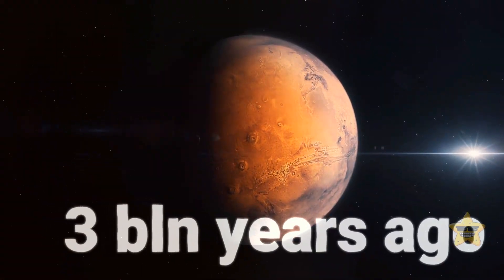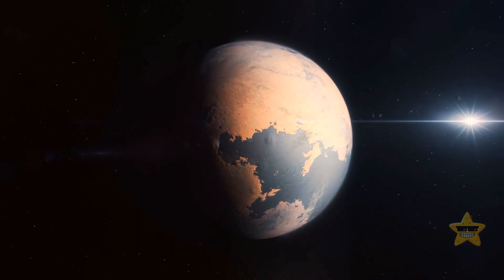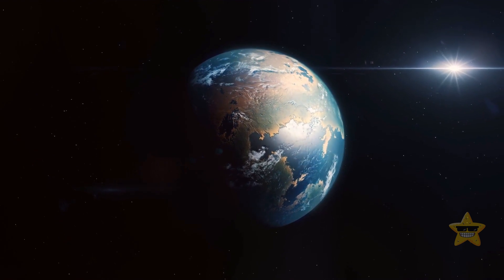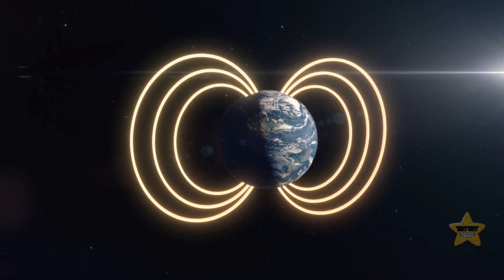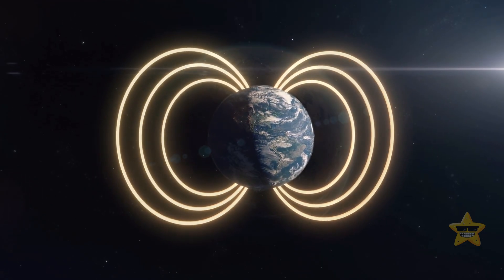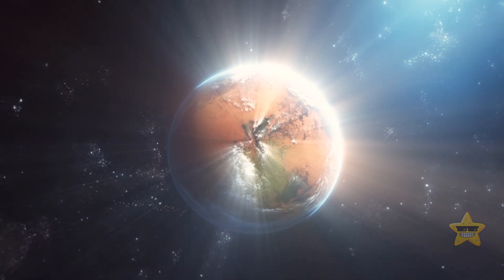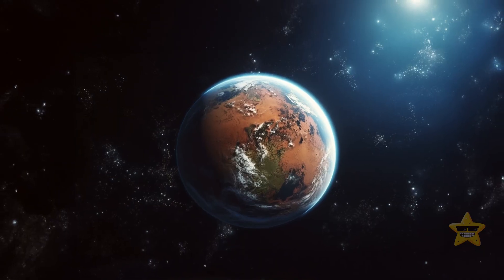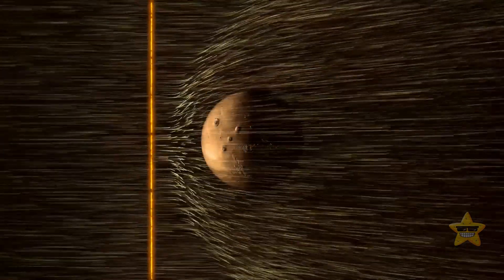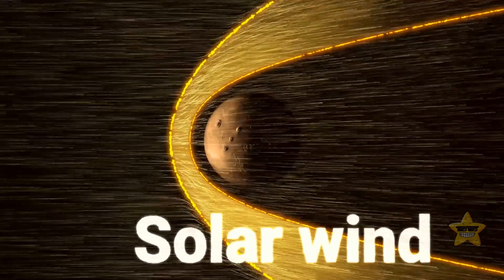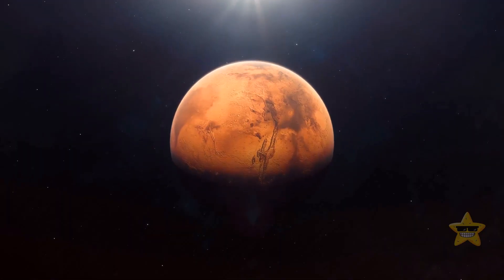Up until 3 billion years ago, Mars might have also been a good place for life. The red planet used to have a thick atmosphere and a strong magnetic field, just like Earth. But unlike our planet, Mars cooled from the inside, which switched off this whole mechanism. Without its magnetic field, nothing could protect the planet from the solar wind that pulled away most of its atmosphere in just a few hundred million years.